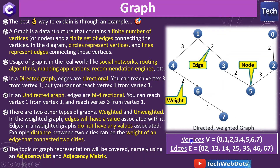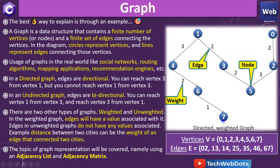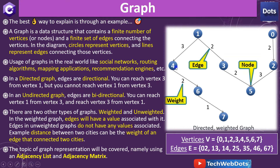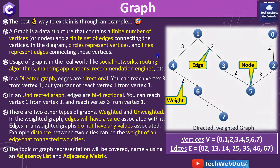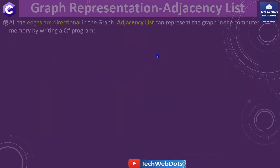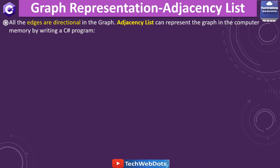Graph representation will be covered using adjacency list and adjacency matrix. From this graph you can see there are vertices from 0 to 7, and there are edges: 0 to 2, 2 to 5, 3 to 5, 1 to 3, 1 to 4, 4 to 5, and 6 to 7. Now the important point is how these representations look in memory.